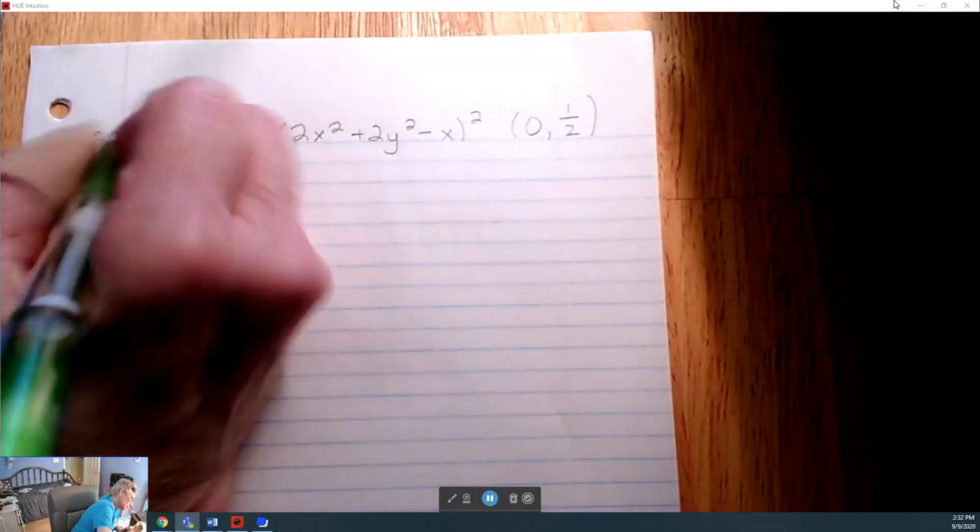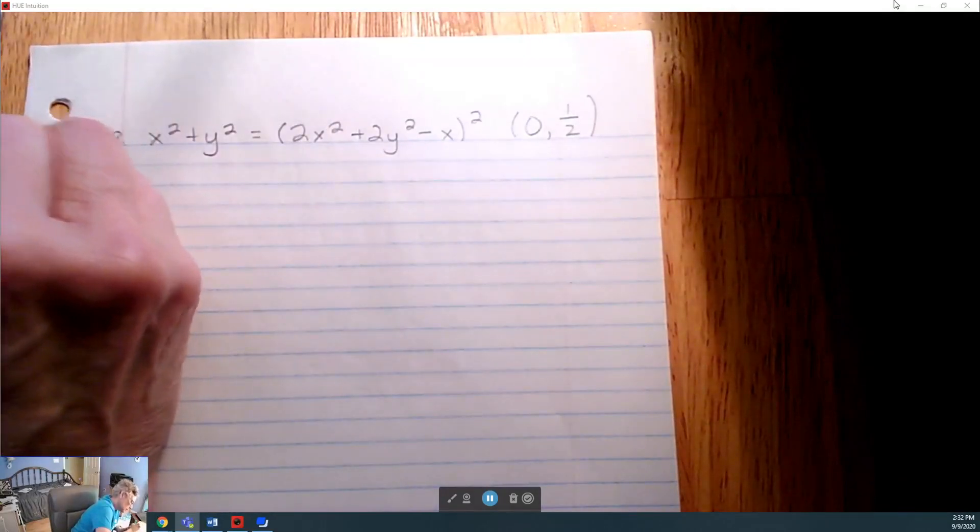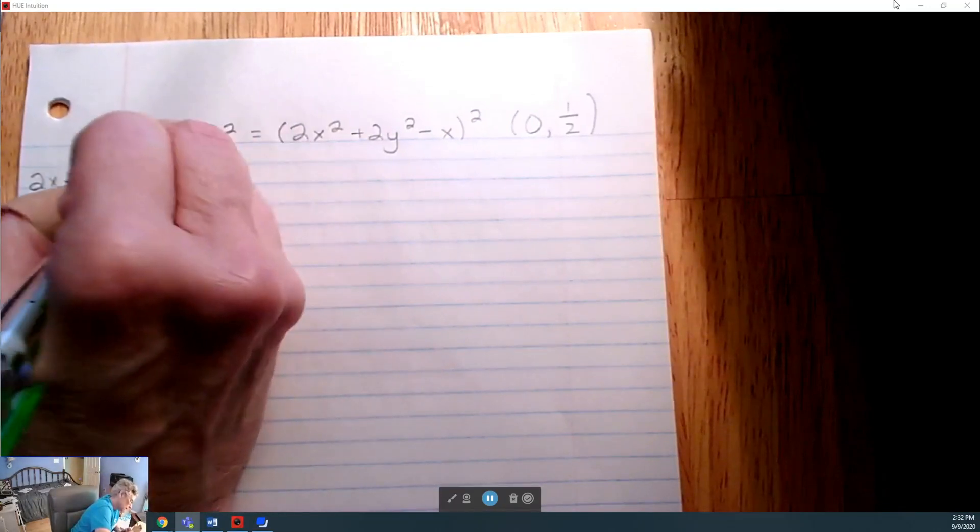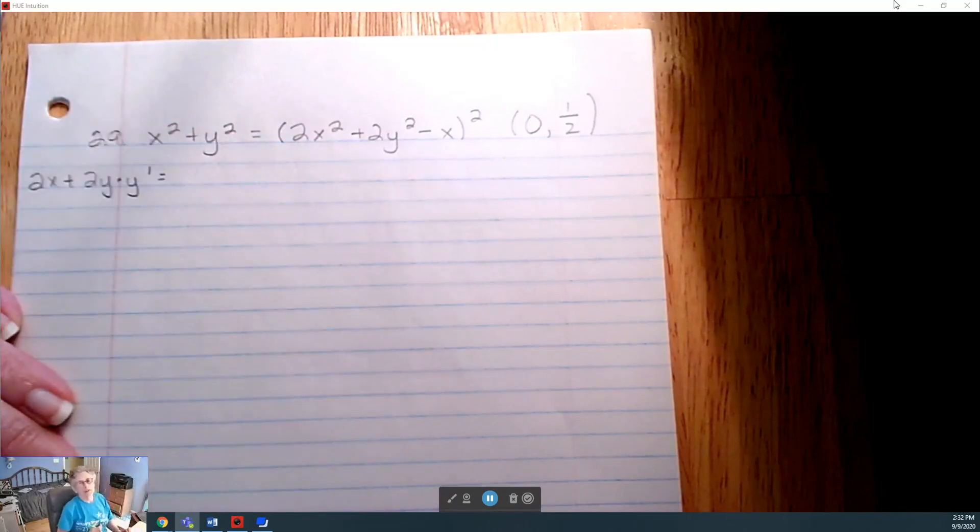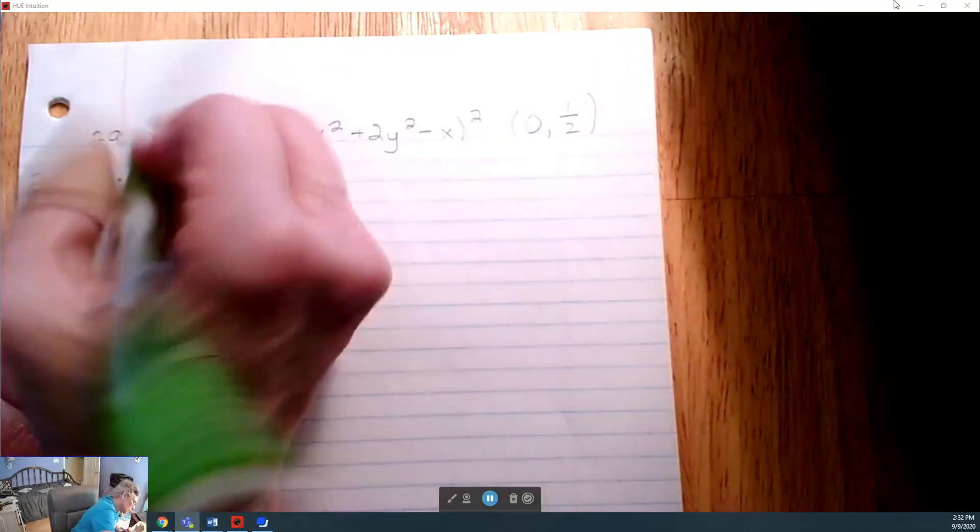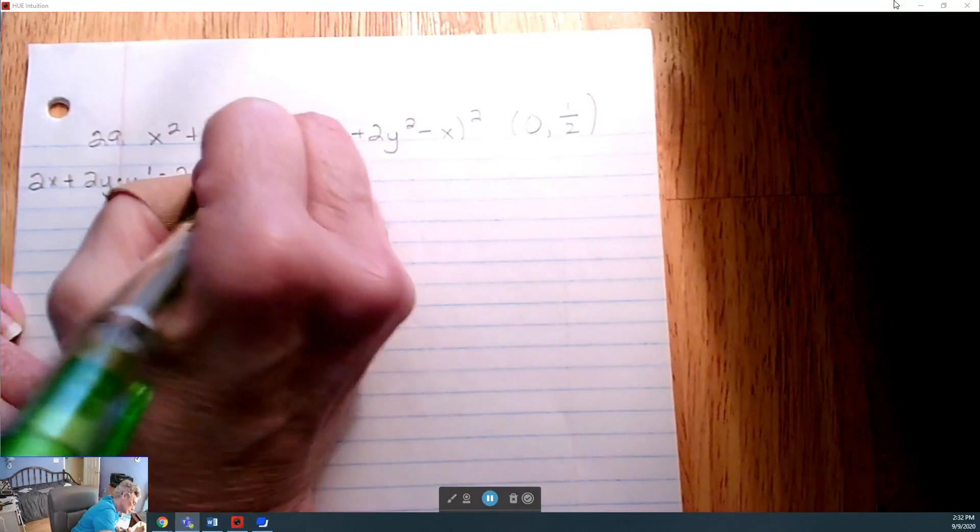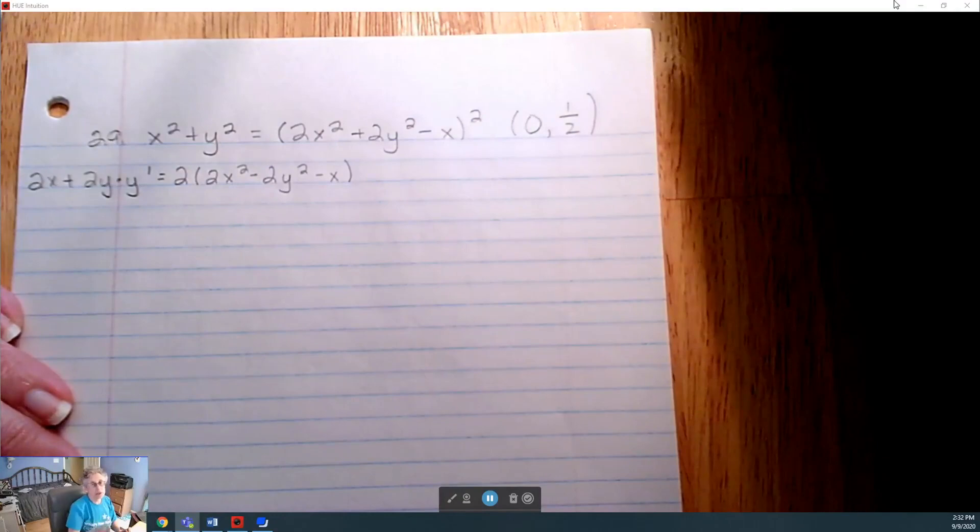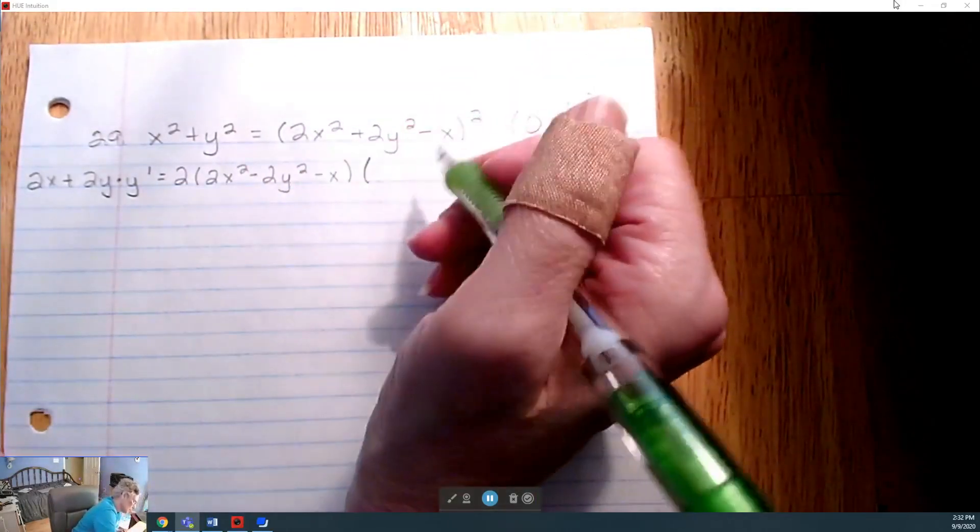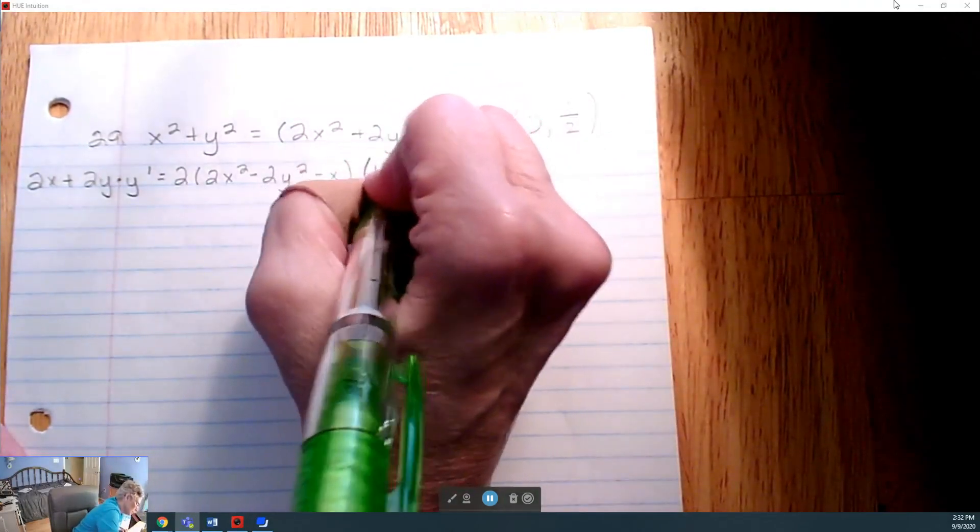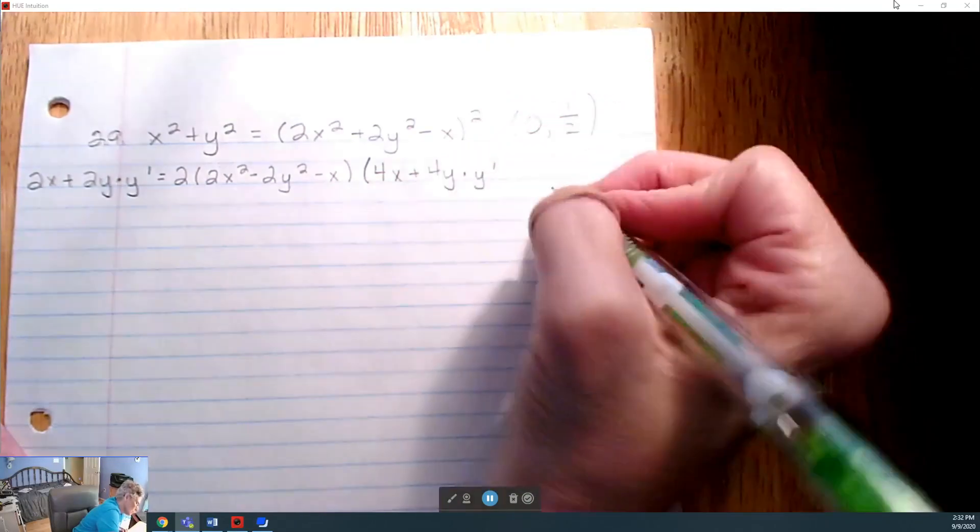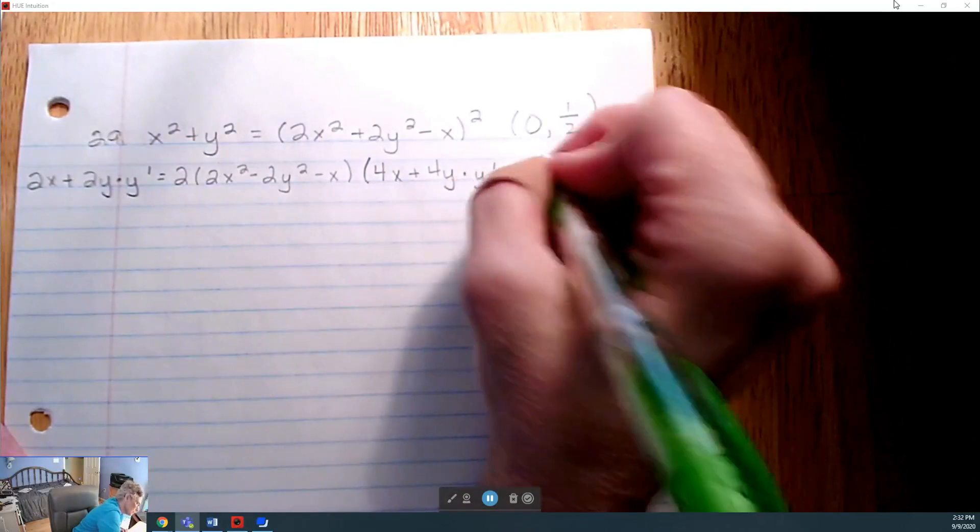Differentiate from left to right. And I know it's going to take a lot of room so I'm going to give myself some extra space by moving all the way over here to 2x plus 2y, y primed. Left-hand side done. Now let's work on the right-hand side. Two folds down. Inside stays the same. Subtract 1 from the exponent. Multiply by the derivative of the inside. So the derivative of the inside gives me 4x plus 4y times y primed minus 1.